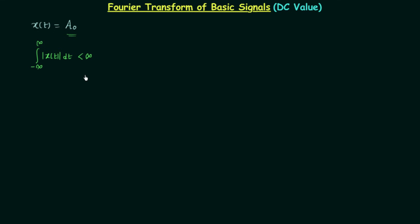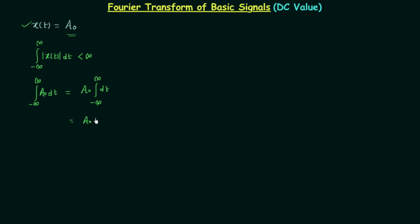When this condition is satisfied we can say that signal x(t) is absolutely integrable. In our case, x(t) is equal to A0, and mod x(t) is also equal to A0 because A0 is a positive value. So we have the integration from minus infinity to infinity of A0 dt. A0 is a constant, so we take it out, giving A0 times the integral from minus infinity to infinity of dt. The result of integration is t, with lower limit minus infinity and upper limit plus infinity.